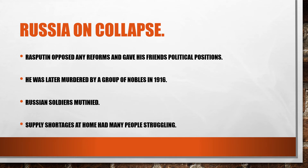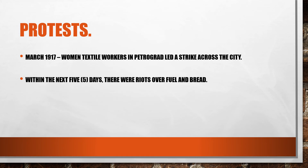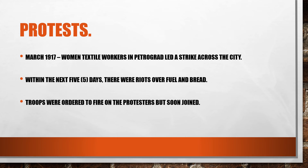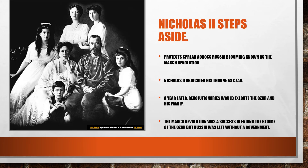Supply shortages caused by the war meant that people at home were struggling. In March of 1917, women textile workers in Petrograd led a strike across the city. Within five days there were riots over fuel and bread. Troops were ordered to fire on the protesters, but instead of firing, the troops actually joined the people in their protest — turning a small strike into a large call for change.